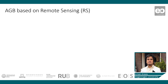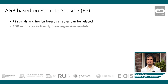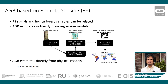But how does AGB mapping work? Usually, AGB estimates from the ground, like forest inventory data, are correlated with remote sensing signals, such as surface reflectance or backscatter intensity. AGB can then be predicted spatially from these images. This method is essentially an indirect method, while the direct estimation of AGB makes use of parametric physical models.